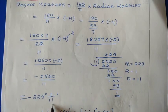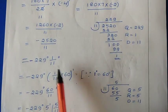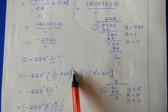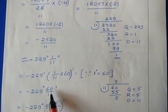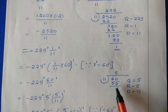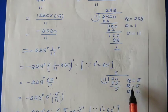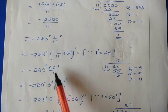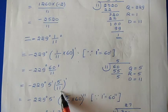The remaining 1/11 degree is in fraction form, so convert to minutes: (1/11) × 60 = 60/11 minutes. This is still a fraction, so perform division: 60 ÷ 11. 11 × 5 = 55, remainder 5. Quotient is 5, remainder is 5, divisor is 11. So we get 5 minutes and a remaining fractional part 5/11 minute, which is still in fraction form.